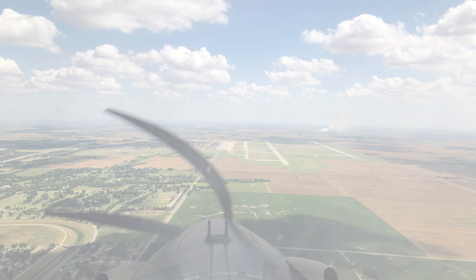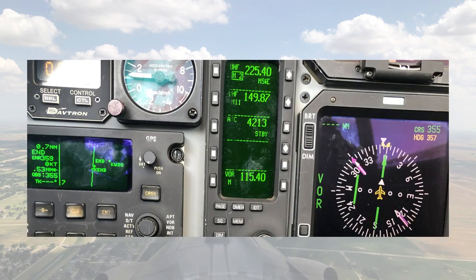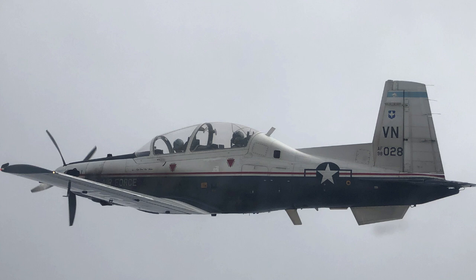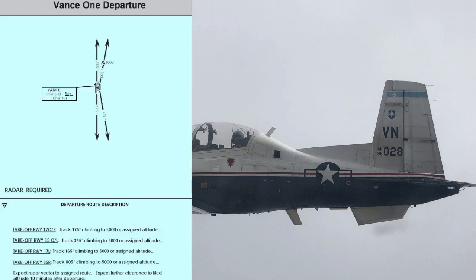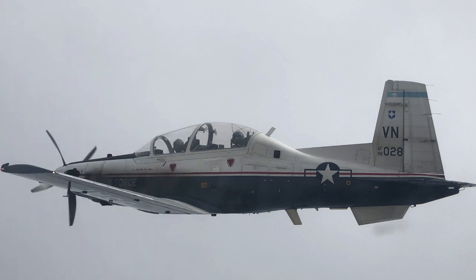During ground ops, you will tell clearance delivery your local squawk and profile. Clearance will read back your squawk and profile and then likely clear you for the Vance 1 departure when the status is restricted pattern or worse. On departure, maintain 500 feet below the clouds unless cleared the Vance 1 departure or cleared a stereo route.